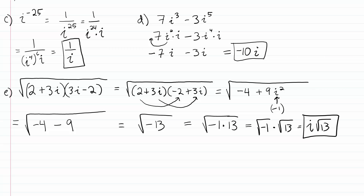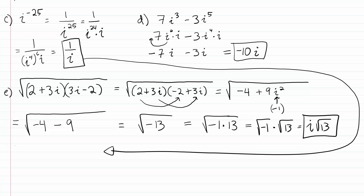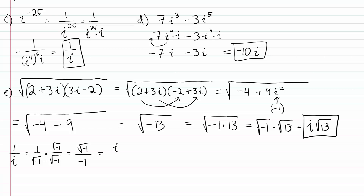Let's revisit the answer from problem C: 1 over i. Many professors will want you to rationalize this fraction. Since i equals the square root of negative 1, we rationalize by multiplying by the square root of negative 1 over itself. The denominator becomes negative 1, and the numerator becomes the square root of negative 1, which is i. So i divided by negative 1 gives negative i. You can rewrite the answer in C as simply negative i — the same result, just rationalized.